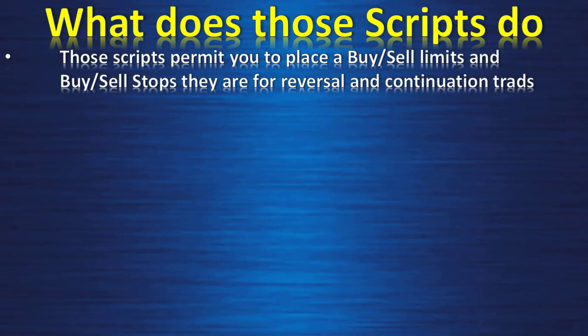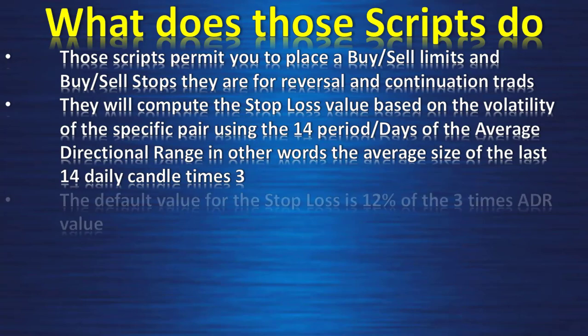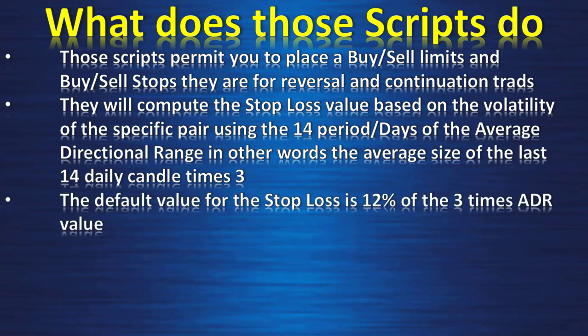What do those scripts do? First, those scripts permit you to place a buy or sell limit and buy/sell stops. They are for reversal and continuation trades. They will compute the stop loss value based on the volatility of the specific pair using the 14-period Average Directional Range — in other words, the average size of the last 14 daily candles times 3.